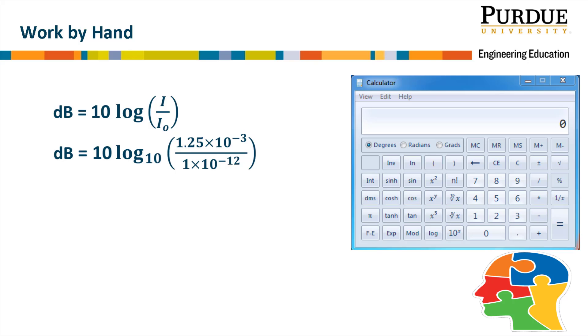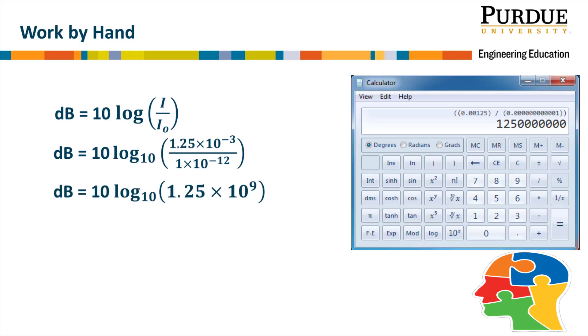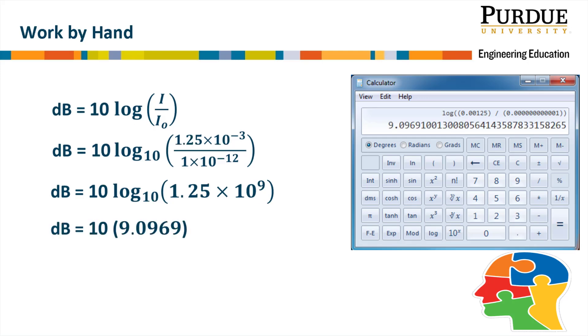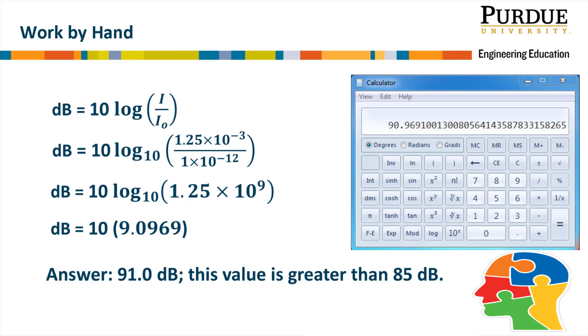The loudness of the sound is equal to 10 multiplied by the log to the base 10 of the quantity 1.25 times 10 to the power minus 3 divided by 1 times 10 to the power minus 12. The first operation that is performed is the one in parentheses, giving us the answer 1.25 times 10 to the power 9. The next operation is log to the base 10 of the answer in parentheses giving us 9.0969. Our final answer is approximately 91 decibels. This loudness level is greater than 85 decibels, so ear protection should be worn when using the lawn mower.